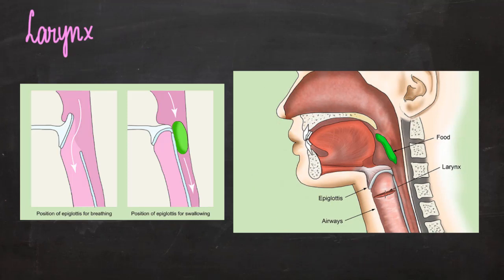The third part of the respiratory system is the larynx, present below the pharynx. When we eat something, food should not enter the windpipe, so the windpipe has to be closed at that time. Normally when we are just breathing, the food pipe or esophagus is collapsed because it has soft walls. A flap on the larynx ensures air goes into the windpipe during breathing.